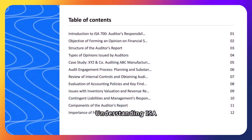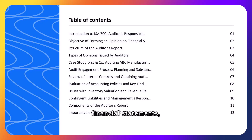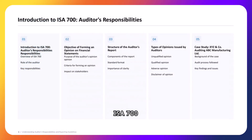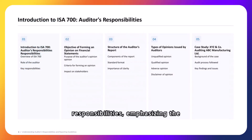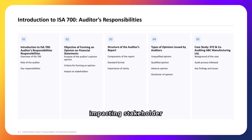Understanding ISA 700 is crucial for auditors to form well-founded opinions on financial statements, ensuring that reports are structured and presented clearly for stakeholders' benefit. ISA 700 outlines auditors' responsibilities, emphasizing the importance of their role in providing a truthful representation of a company's financial health, impacting stakeholder decision-making.